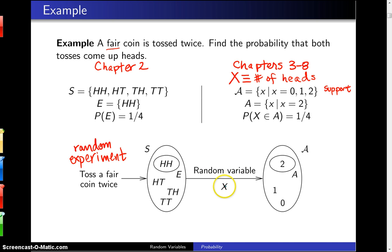Then we define a random variable X to be the number of heads, and you can get zero, one, or two heads. In this case, the event A, or I should say the set A, is simply two, and that's the one that is mapped from heads-heads.